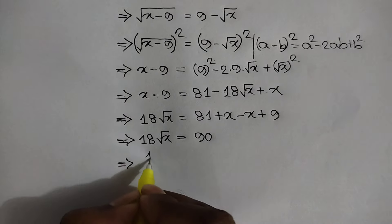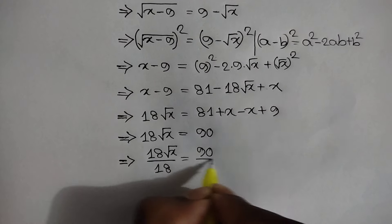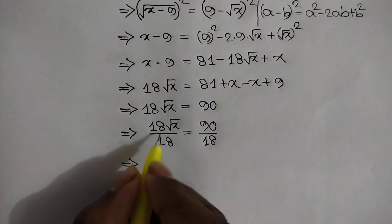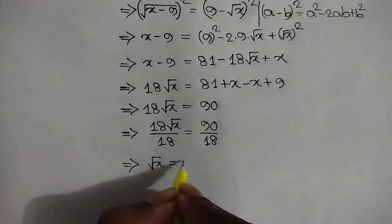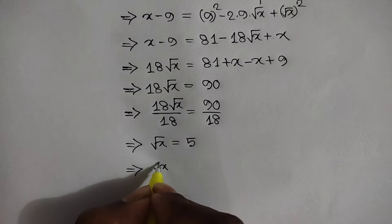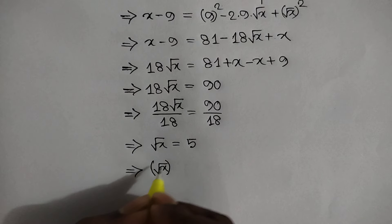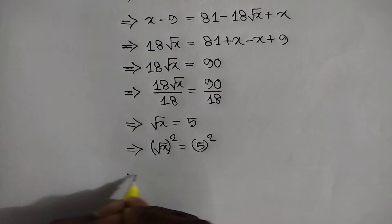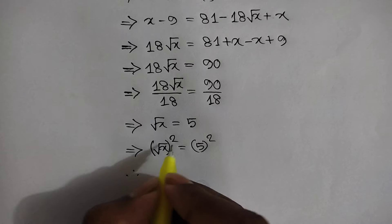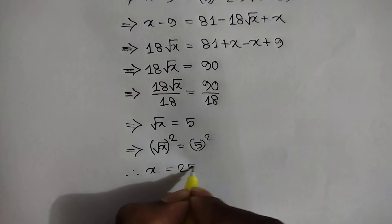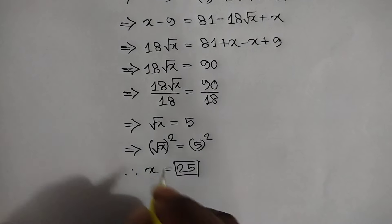Now dividing both sides by 18, we will write 18 root x over 18 is equal to 90 over 18, so root x is equal to 5. Now squaring both sides, this square root cancels out this square, so x is equal to 5 square is equal to 25. So this is the value of x.